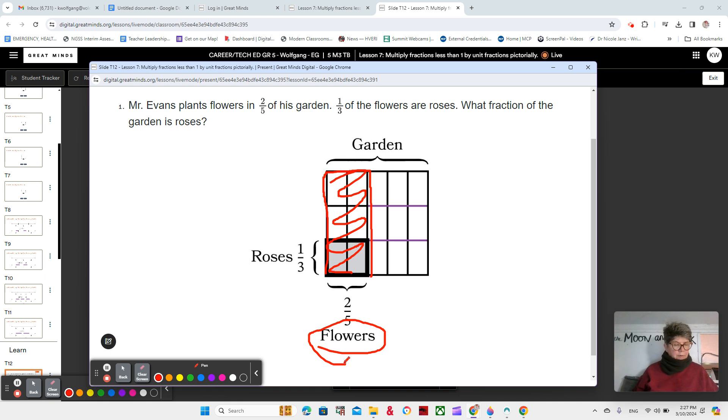But one third of the flowers are roses. So, let's use purple to color in the roses. One third of the flowers. So, this is one third because we see three parts here. One, two, three. So, one third is roses. So, the question is, what fraction of the garden is roses? Right? So, the garden is the whole square.